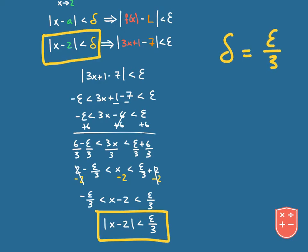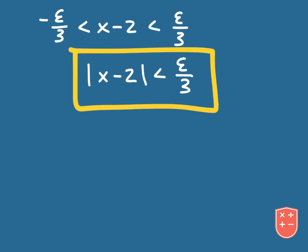At this point we're not done. What I want to do is now use this information — knowing that delta is epsilon over 3 — and work backwards to what we originally had. So to solve the absolute value inequality, we go backwards and say: negative epsilon over 3 is less than x minus 2 is less than epsilon over 3.